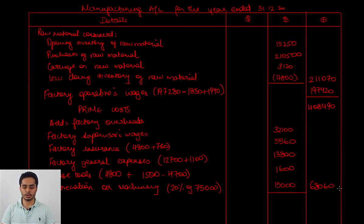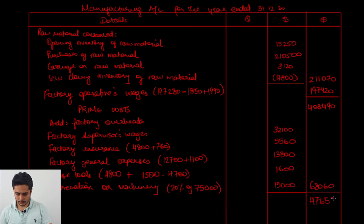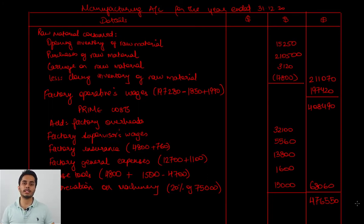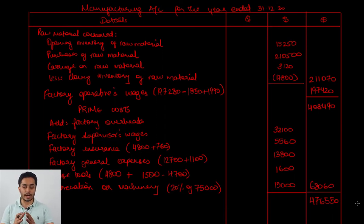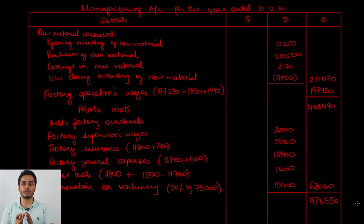Our depreciation is calculated as: loose tools 1,600 and machinery 15,000. The total of factory overheads is 68,060. This is added with the prime cost to arrive at the total factory cost of 476,550. We cannot transfer this directly to the income statement because it includes cost incurred on work in progress. Since opening and closing balances of work in progress are given, we add the opening work in progress balance and deduct the closing work in progress balance to arrive at the cost of production of finished goods only.